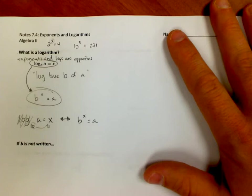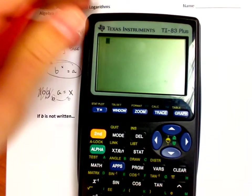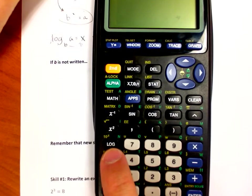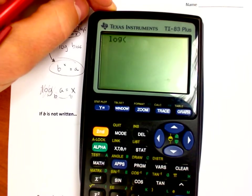Now there are a few special circumstances to talk about because you might notice on your graphing calculator, you might notice on your graphing calculator that I do have a log but it's right over here by the seven. And this log button, if I hit it, it doesn't give me the option to put in that little subscript.